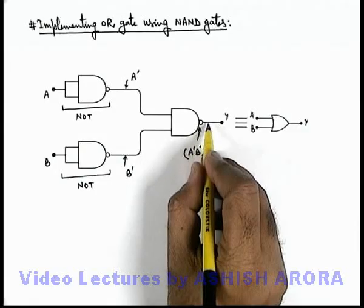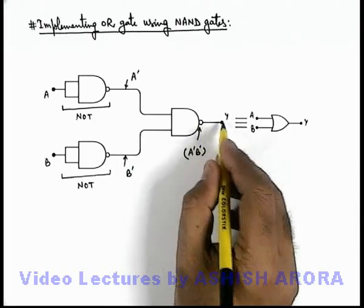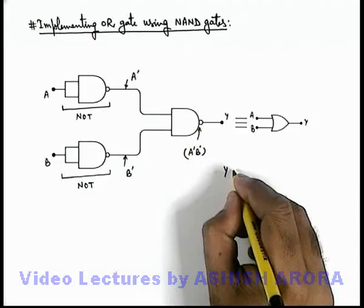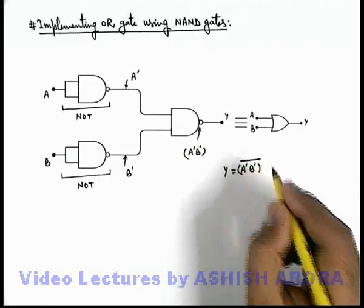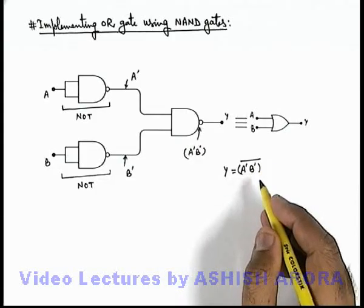Which will pass through the inverter section of this NAND gate. So finally we are getting the output Y as A prime B prime whole prime.